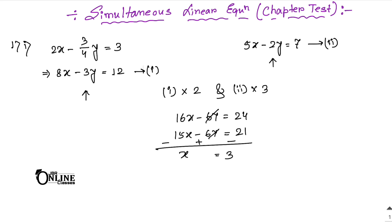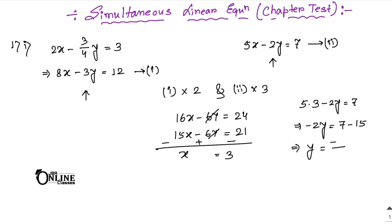Since x equals 3, substitute into 5x minus 2y equals 7: 5 × 3 minus 2y equals 7, so minus 2y equals 7 minus 15, giving y equals minus 8 divided by minus 2, which is 4. So x equals 3 and y equals 4.